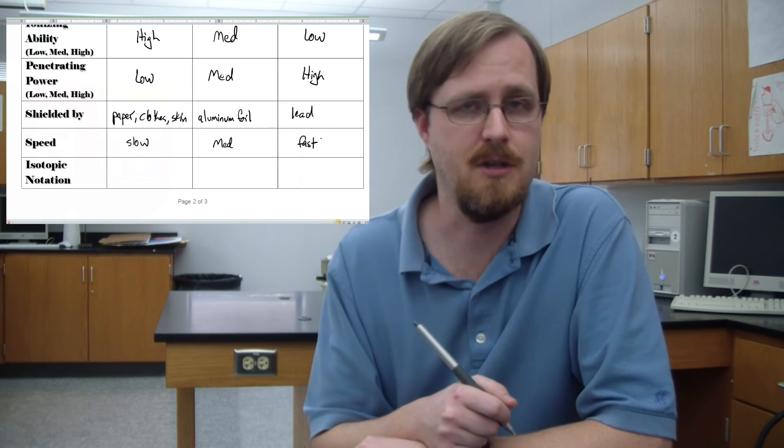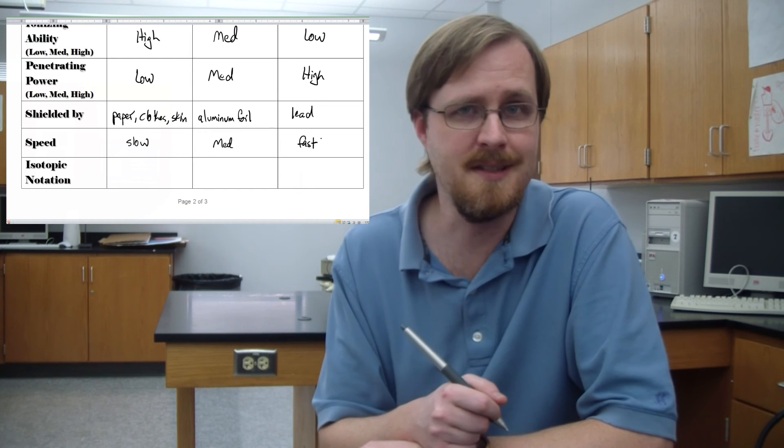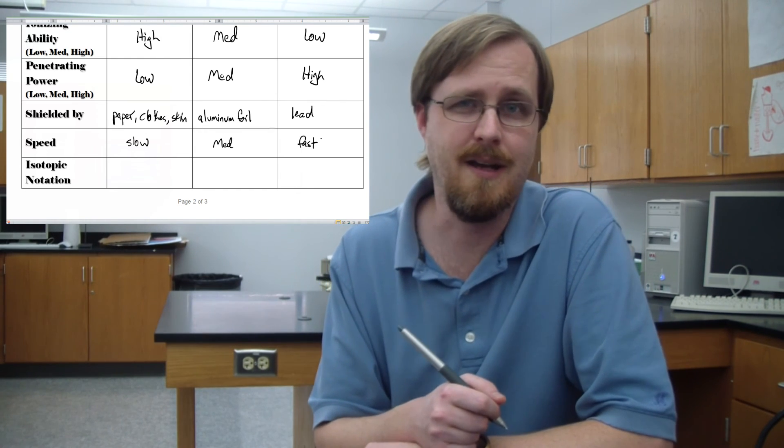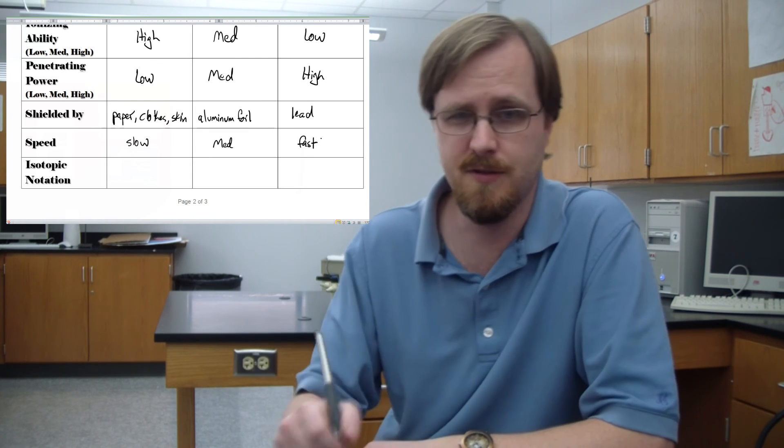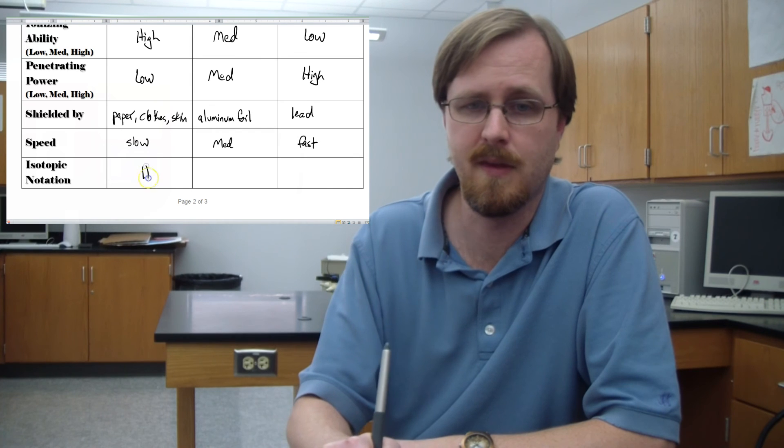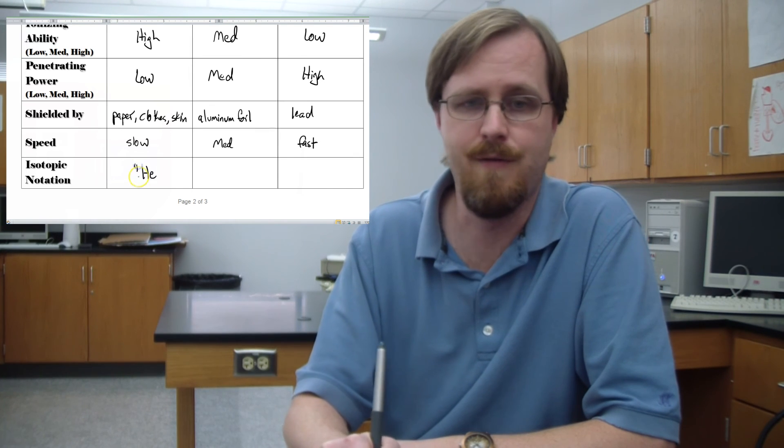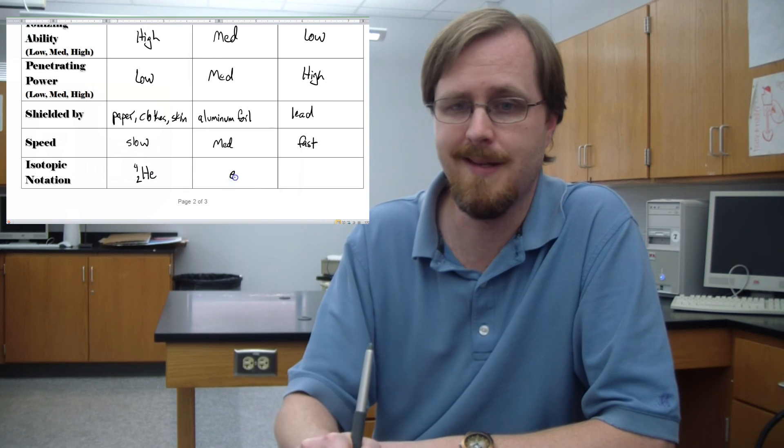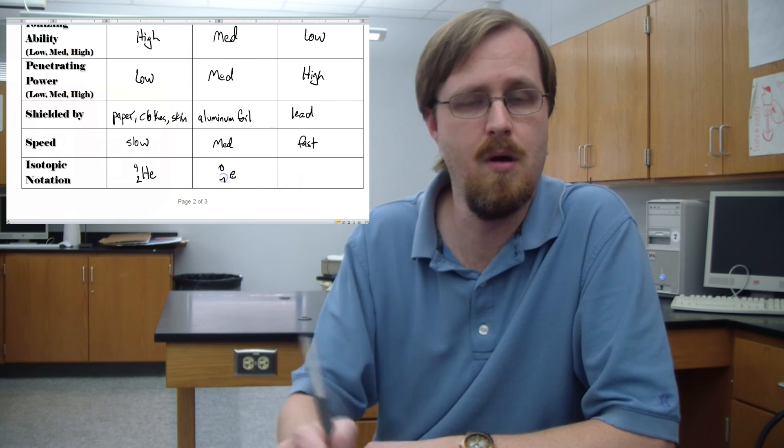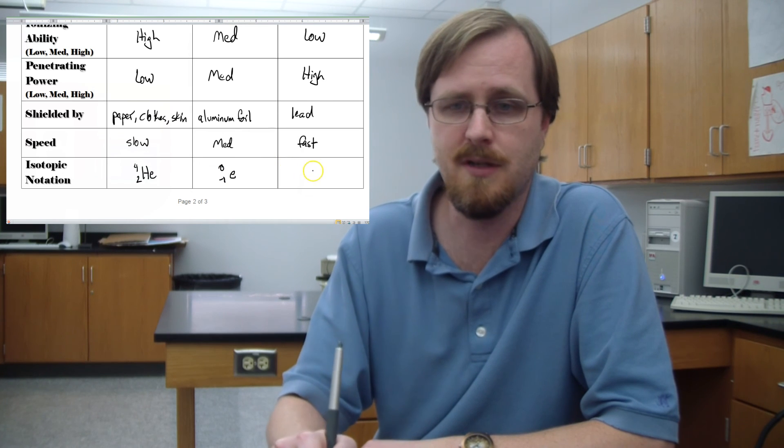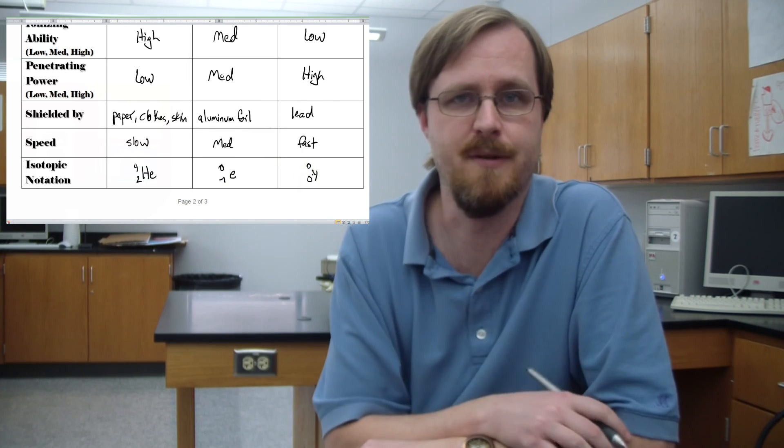Now the isotopic notation. Now this is the important part because this is what we're going to use in the next lesson when we are writing nuclear decay equations. The isotopic notation for the alpha particle is He four over two. The beta particle is E zero over negative one. And the gamma radiation is the Y zero over zero.